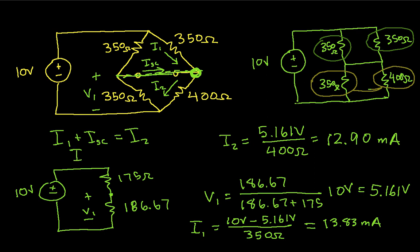So from this we can compute the short-circuit current, ISC, is going to be I2 minus I1, which gives me then 12.9 milliamps minus 13.83 milliamps. Which, when I work this guy out, is minus 0.93 milliamps. So that gives us the short-circuit current.